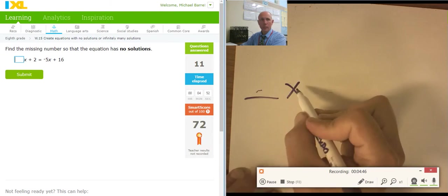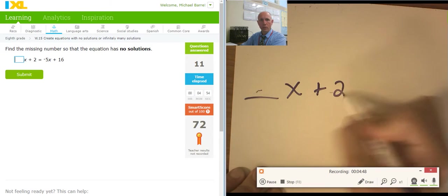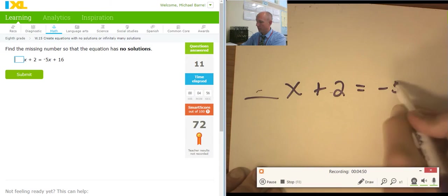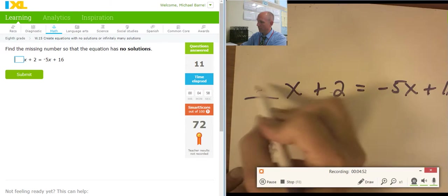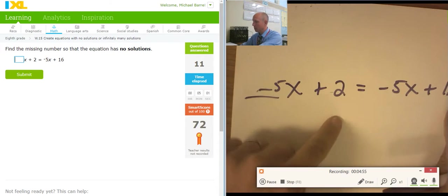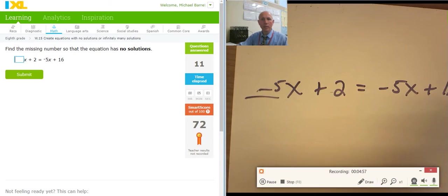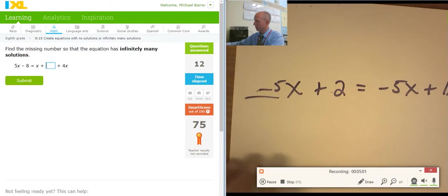2x equals 6. Blank x plus 2 equals negative 5x plus 16. Probably negative 5 right there. Negative 5s. They cancel. It gives me no solution. So negative 5.